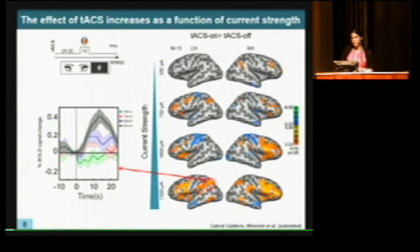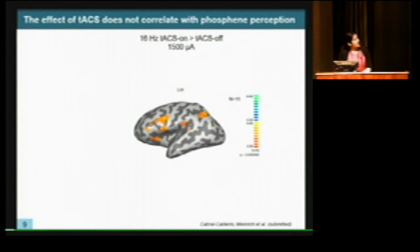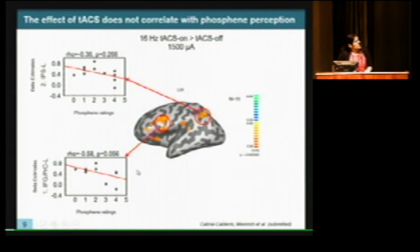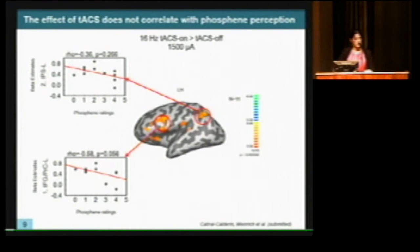One concern when increasing current strength is that participants also experience stronger phosphene perception. To check that the BOLD signal effects are not explained by phosphene perception, we kept current strength constant and correlated stimulation effects in different brain regions with participants' phosphene ratings after each run. There was no significant correlation — if anything, a tendency toward a negative correlation, meaning stronger phosphene perception was associated with less observed stimulation effect. So we cannot attribute the BOLD maps to phosphene perception.